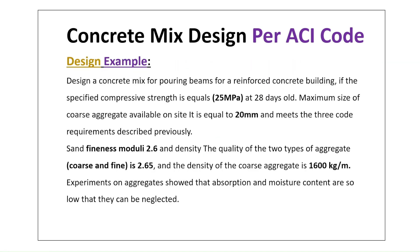Design example: design a concrete mix for pouring beams for a reinforced concrete building. The specified compressive strength FC' = 25 MPa at 28 days. The maximum size of aggregate available on site is 20 mm and meets the code requirements. The sand fineness modulus is 2.6, and the specific gravity of both coarse and fine aggregate is 2.65. The density of coarse aggregate is 1,600 kg/m³. Absorption and moisture content of aggregates are negligible.